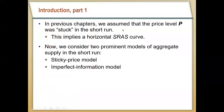So far we've assumed that the price level is completely fixed in the short run — that P is stuck at some previously determined level in the short run. That gives us a horizontal short run aggregate supply curve. We're going to break this down into two different theories, two different models for short run prices.